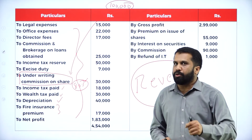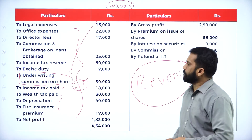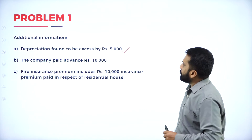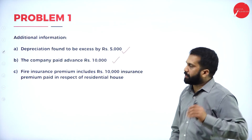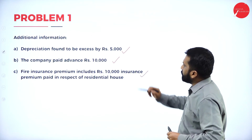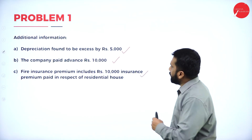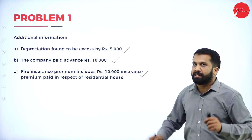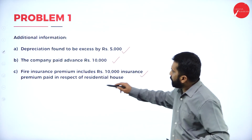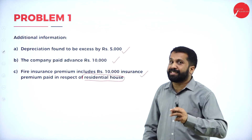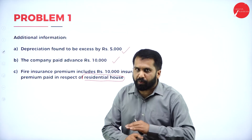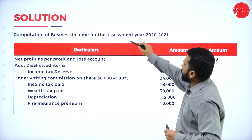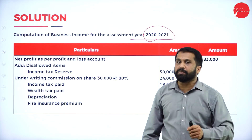Now I will go to your answer and show you how to do this calculation. These are the information we have: depreciation found to be excess 5,000; the company paid advance of 10,000; fire insurance premium includes 10,000 insurance premium paid in respect of residential house. Fire insurance premium — we take only that which belongs to your house, because we are doing only business-related items. Computation of business income for the assessment year 2020 and 2021.